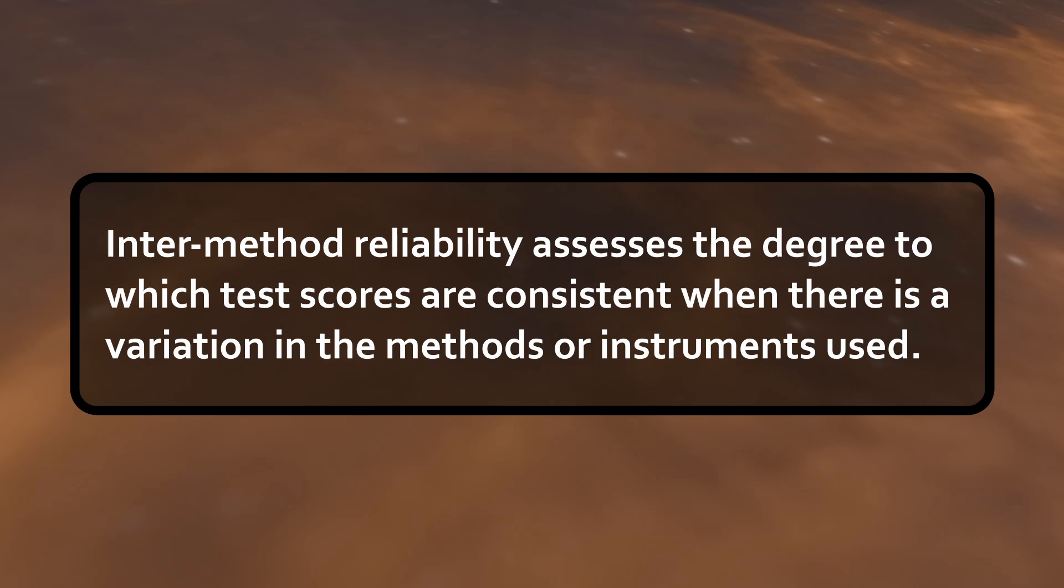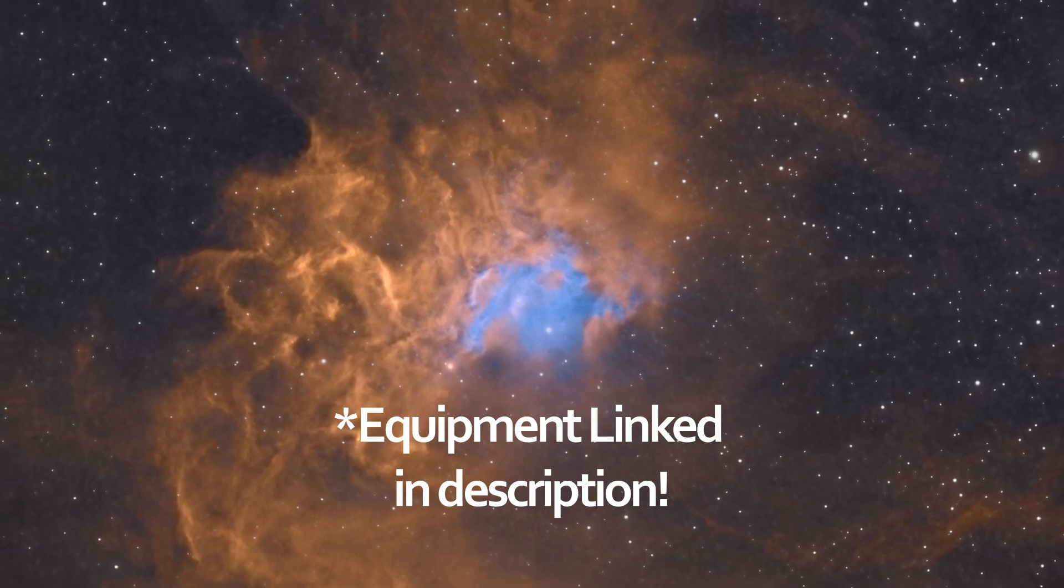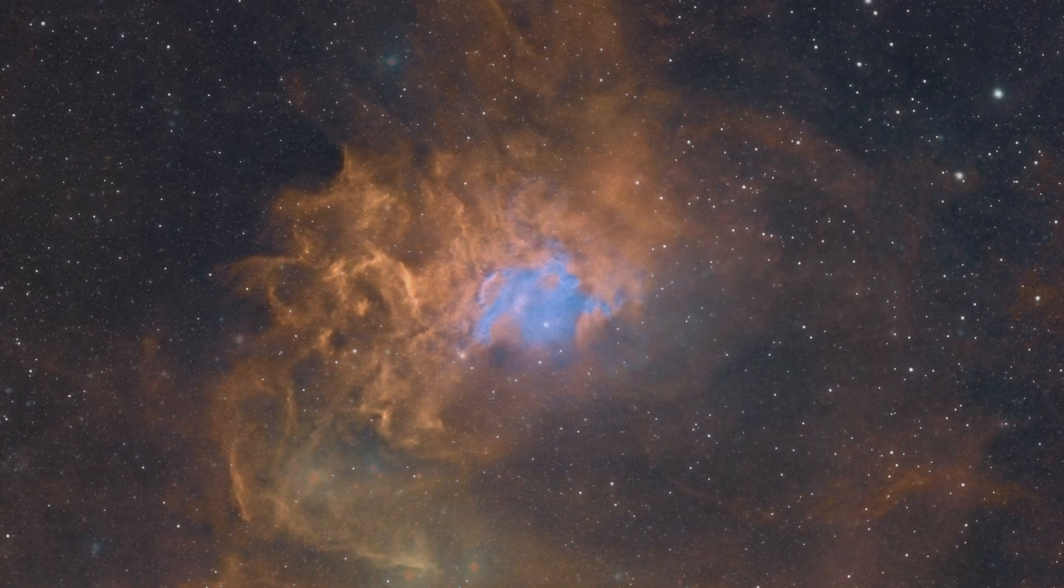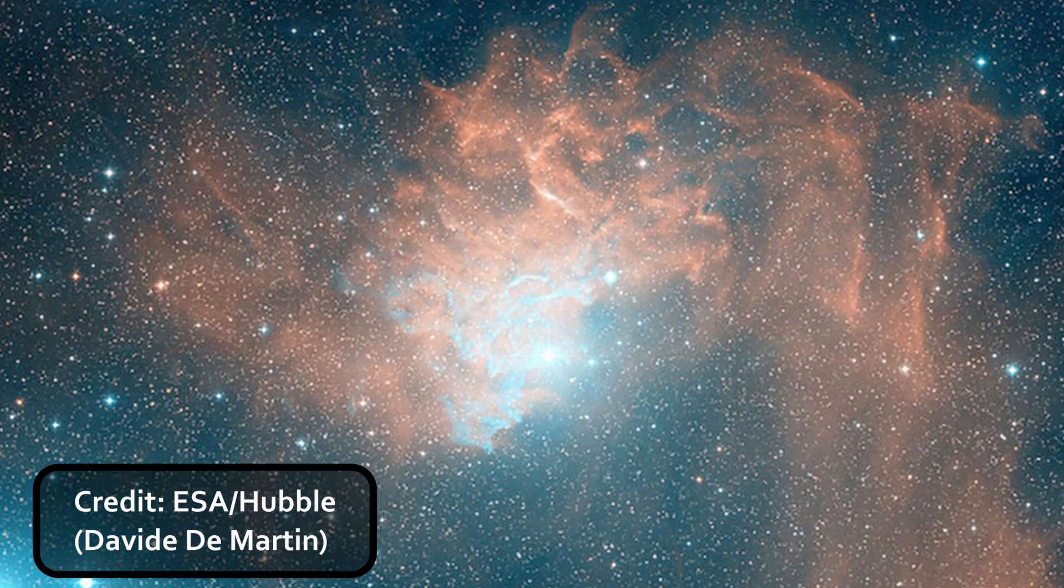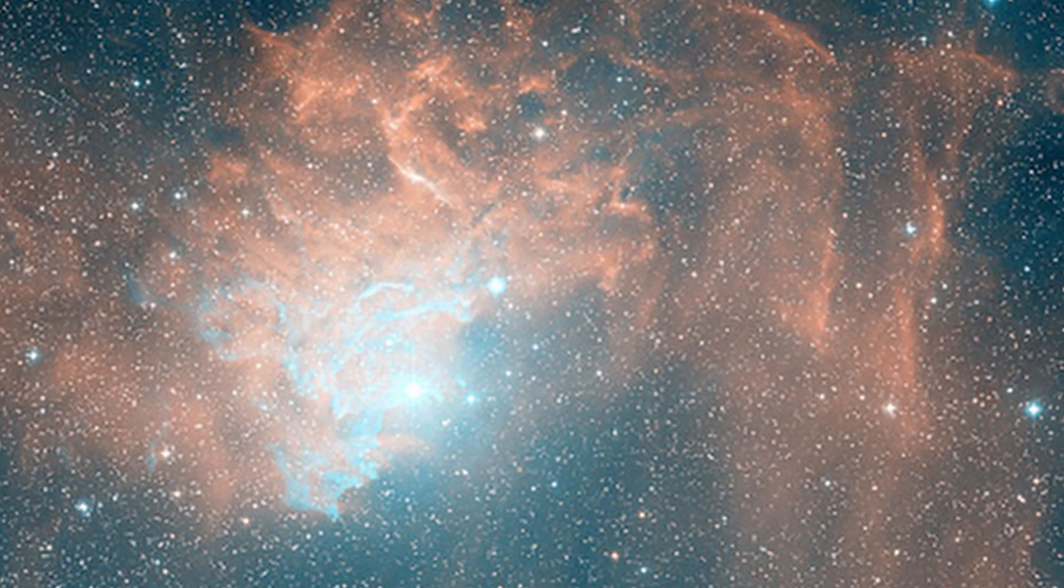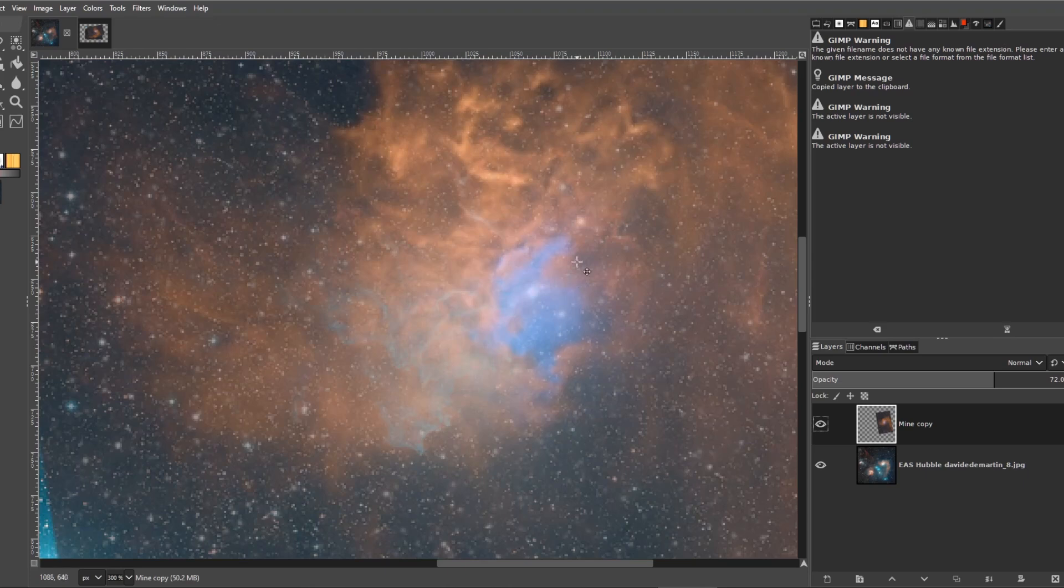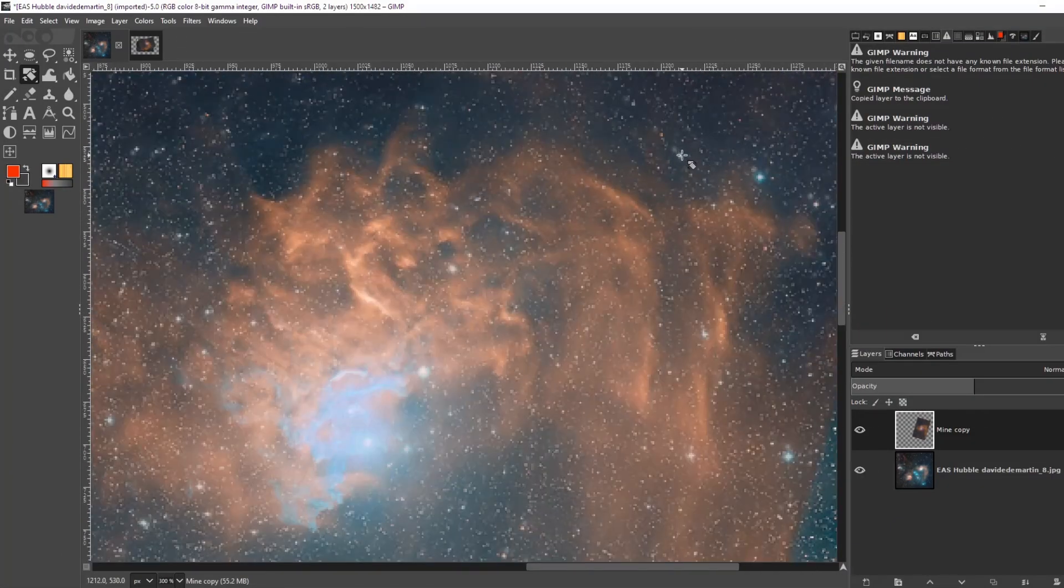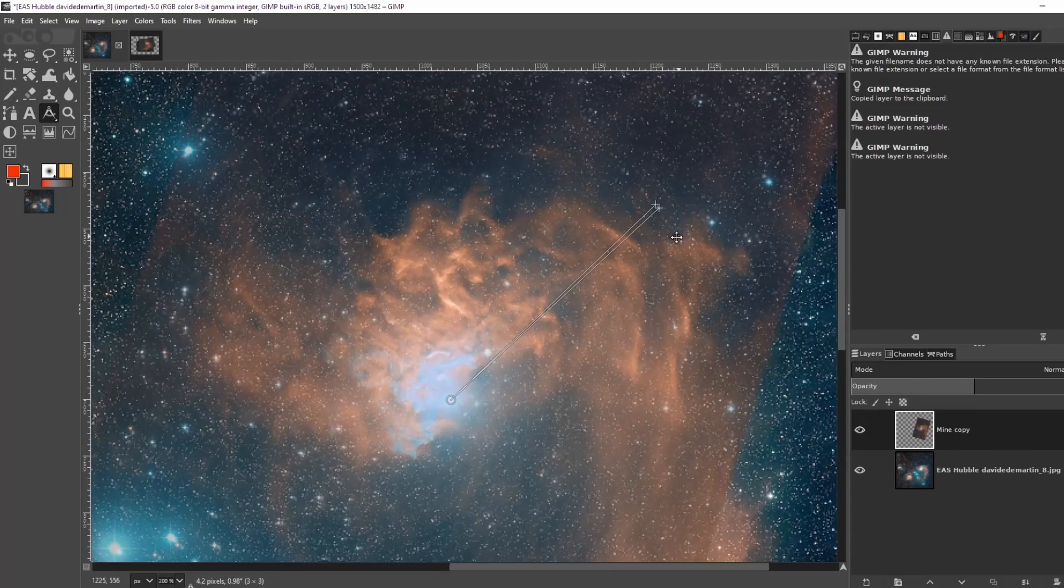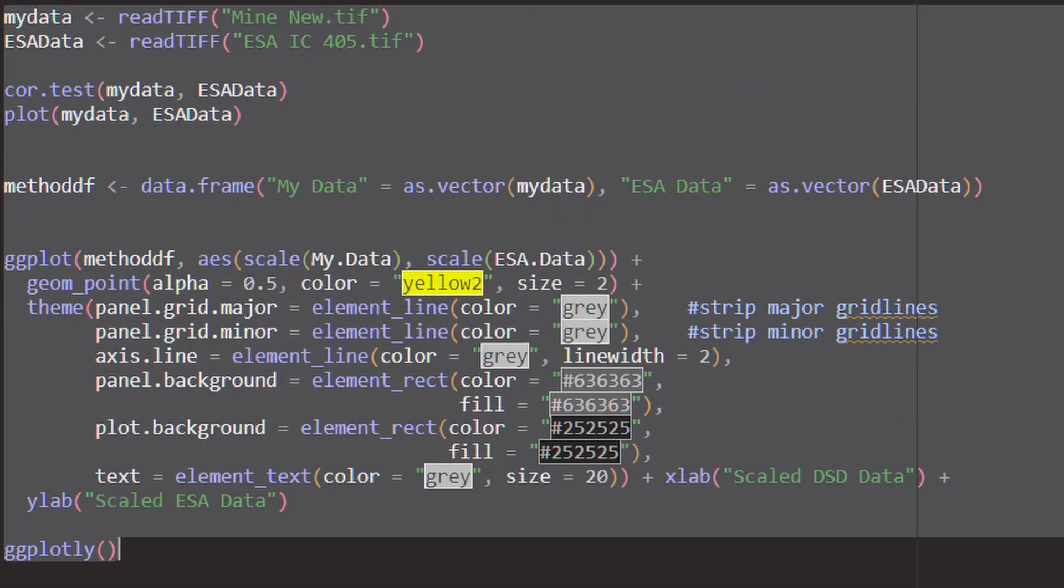There's another type of reliability. We'll call it inter-method reliability. We measure the same thing, but using different equipment and check the results for consistency. Here is my processed image of IC405 taken with an 80-millimeter refractor and using the Hubble palette. Here is the same target from ESA Hubble. This image is much better than mine, but the image was taken with Palomar's Observatory's 48-inch telescope. So different equipment. Much different equipment. For this comparison, I'm going to align our two images and crop them similarly to our previous test. I'll go ahead and make it grayscale. You can see that this image has much more detail. I like it. So we'll go ahead and find the correlation between the pixels.